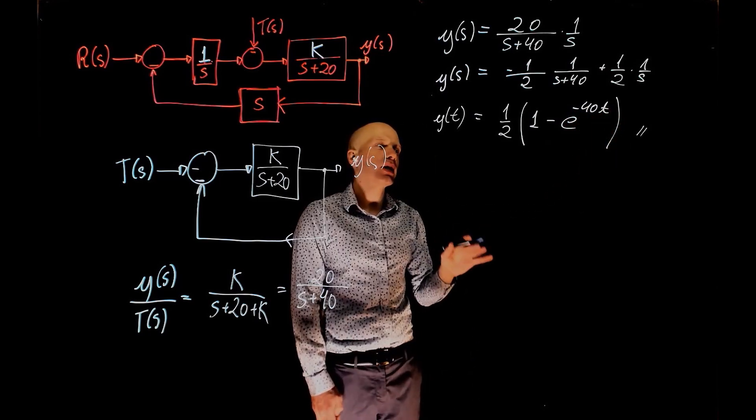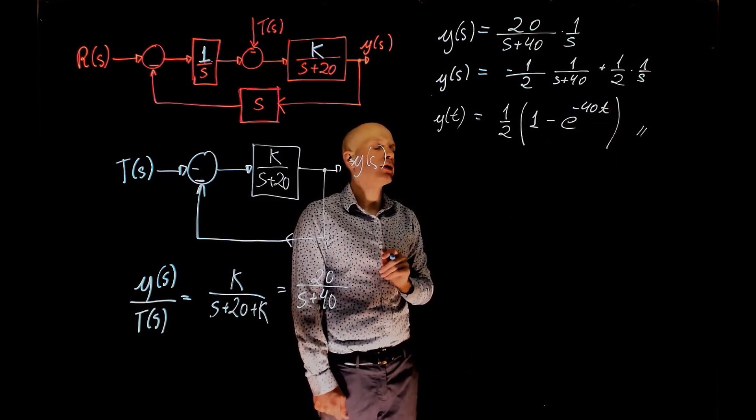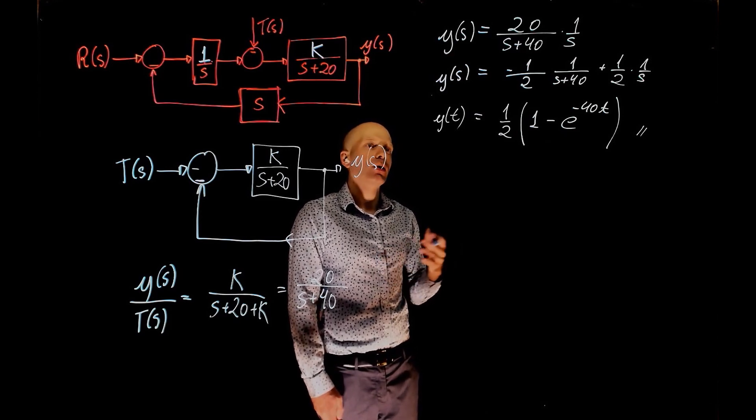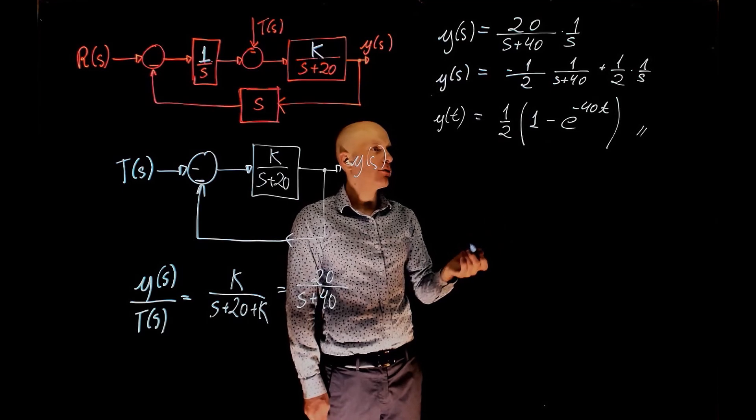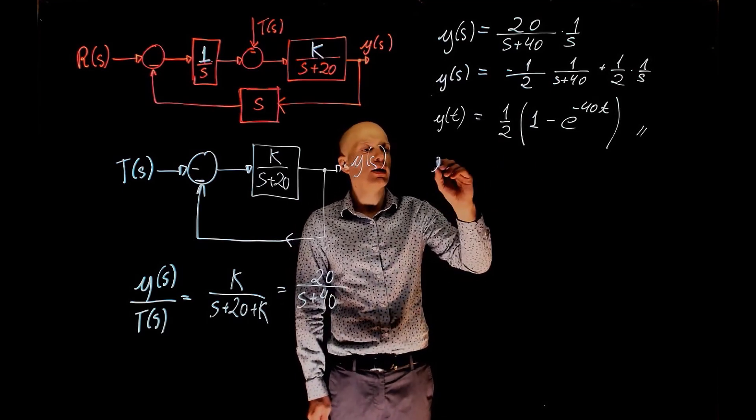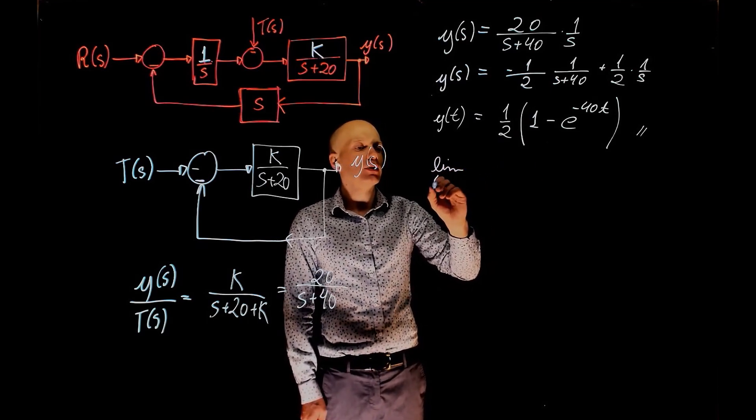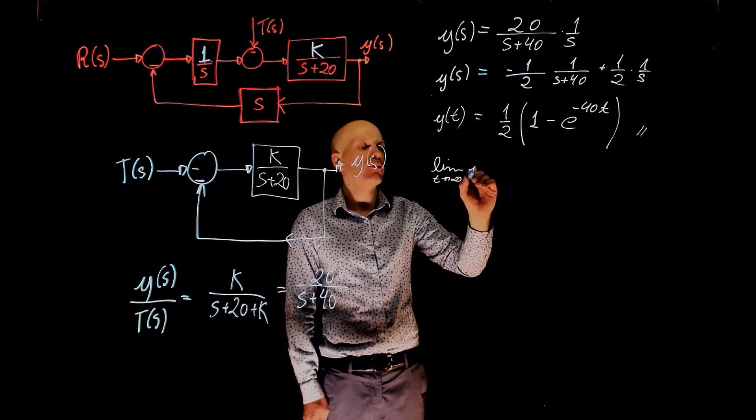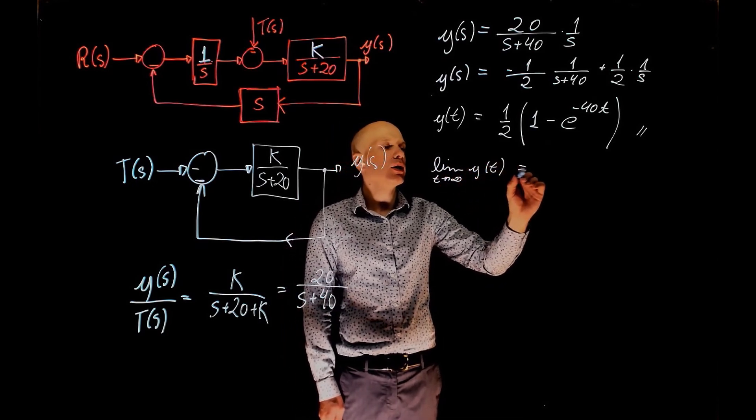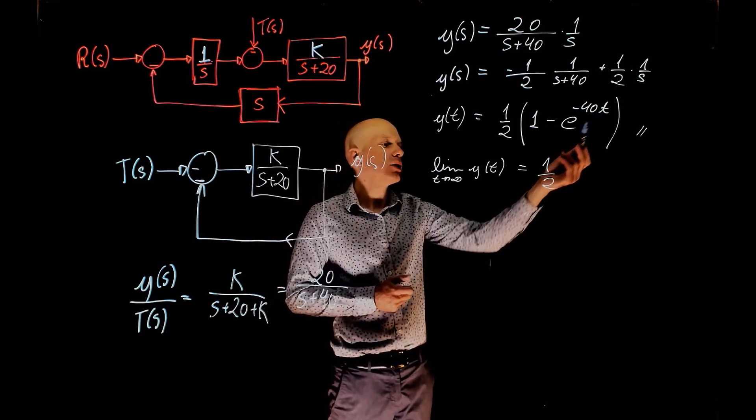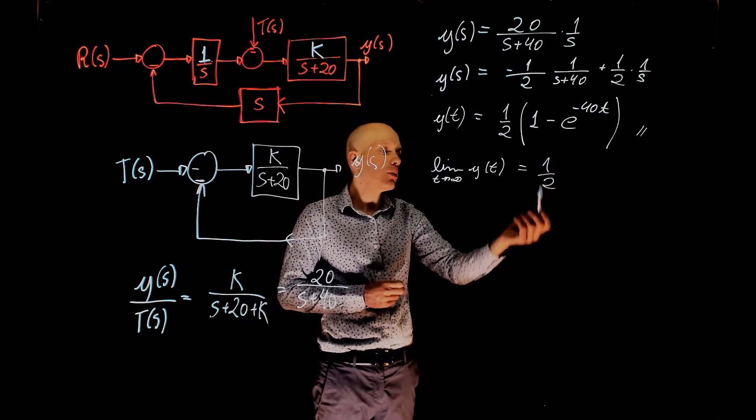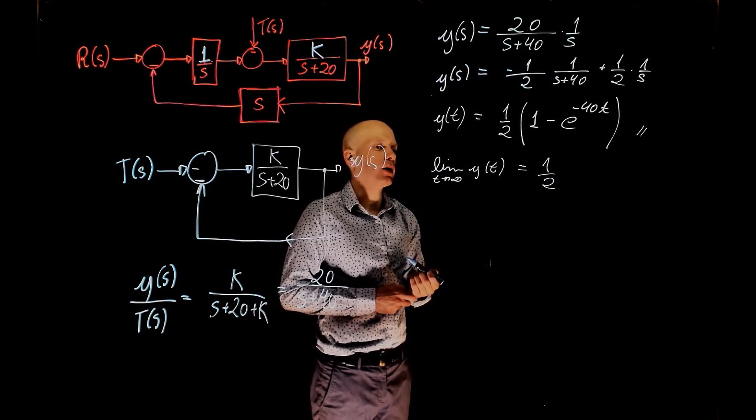Now we are interested in the settling time within 2% of the final value. So what is 2% of the final value? First, let's find the final value. The final value is the limit when t tends to infinity of y(t). That is 1/2.